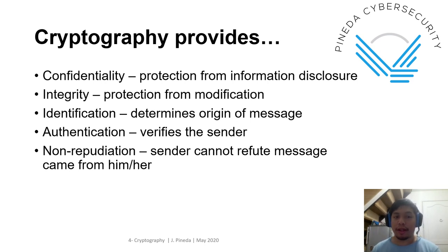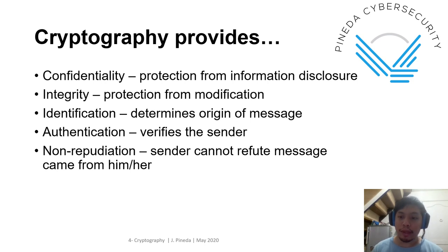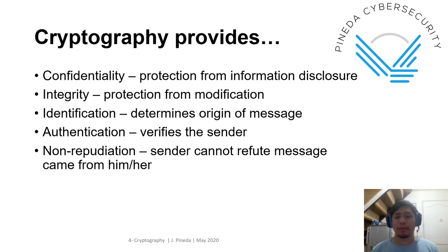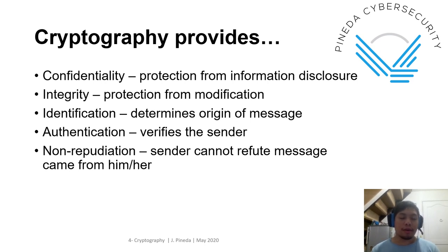Cryptography provides several functions. From the first lesson we discussed the three features of information security: confidentiality, integrity, and availability. In cryptography, it provides confidentiality — protecting the message from information disclosure — and integrity, which provides protection from modification. It also provides sub-features such as identification, authentication, and non-repudiation. Identification and authentication are sub-features of confidentiality, while non-repudiation is a sub-feature of integrity.